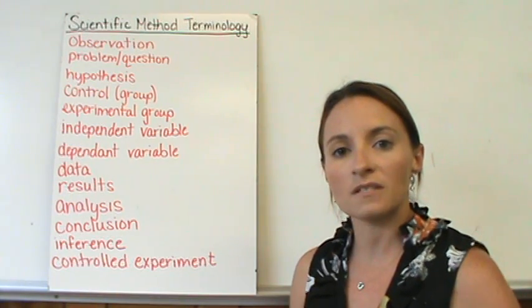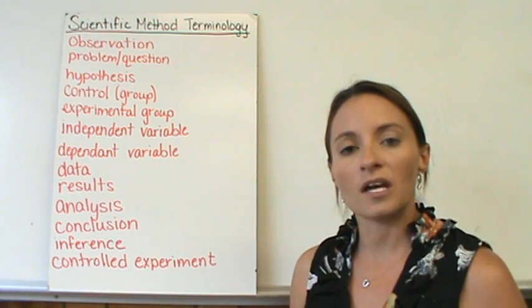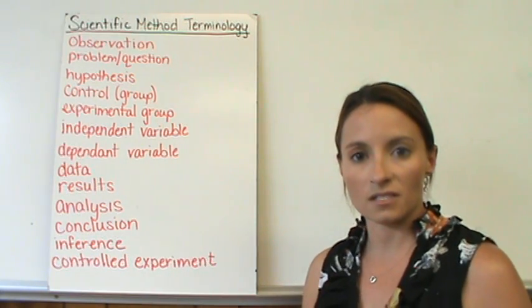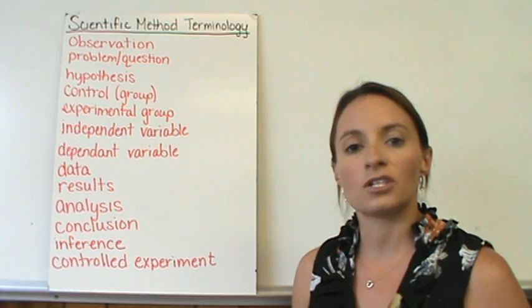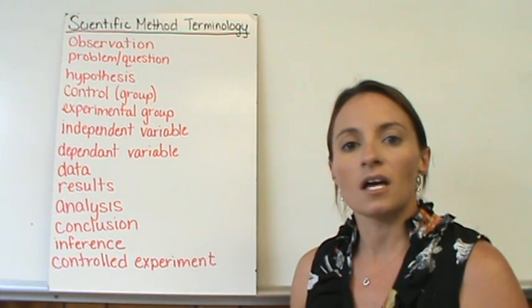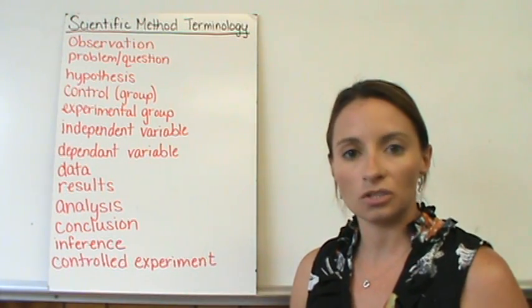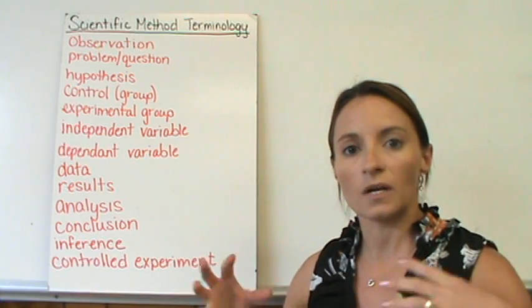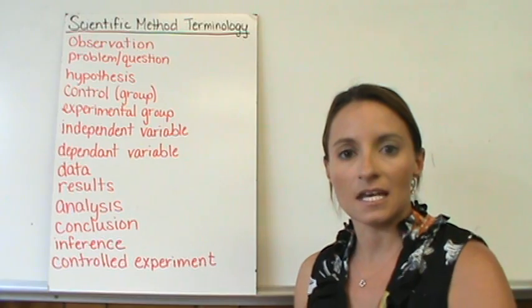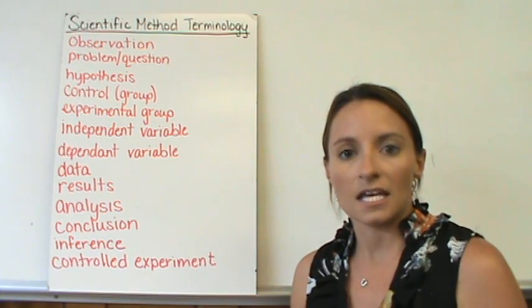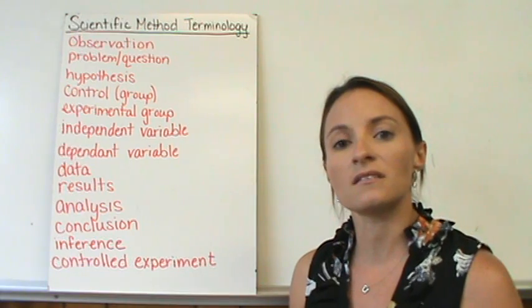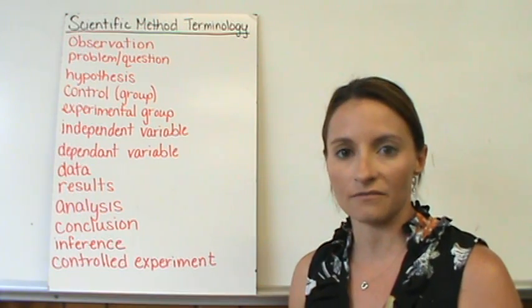There are also two types of observations you can make. You can make qualitative observations and quantitative observations. A qualitative observation talks about the quality of something, so it would be anything that does not include a number. It sounds like this, it smells like this, it tastes like this, it looks like it's this color. Those pieces of information are qualitative observations.